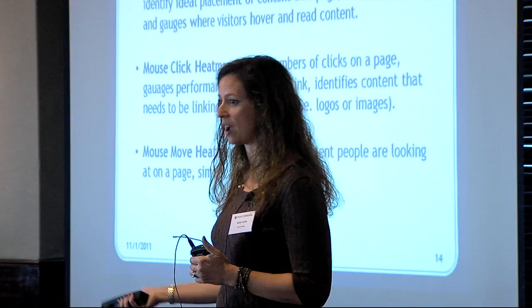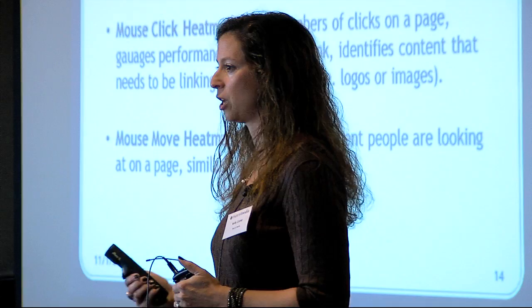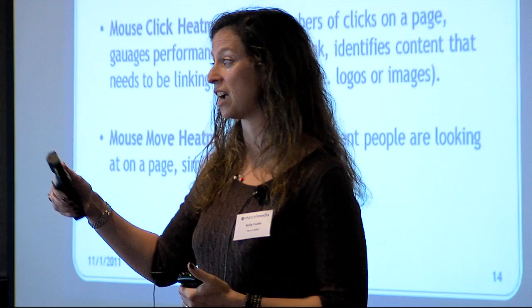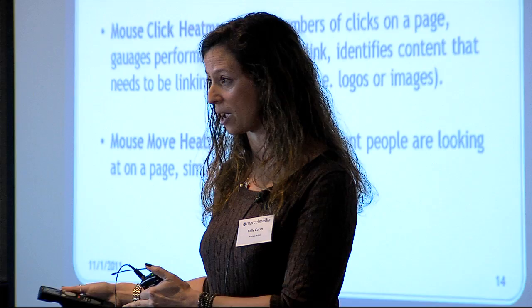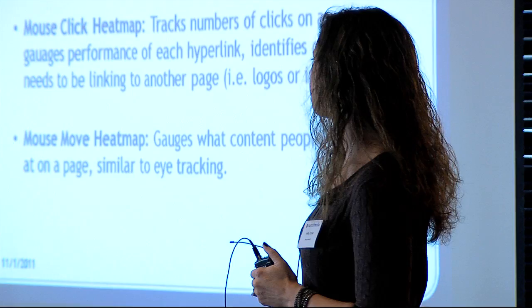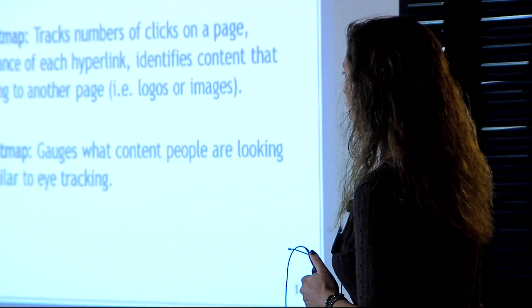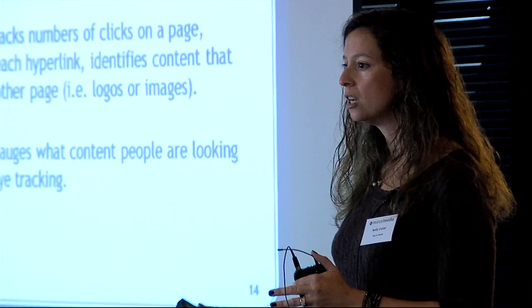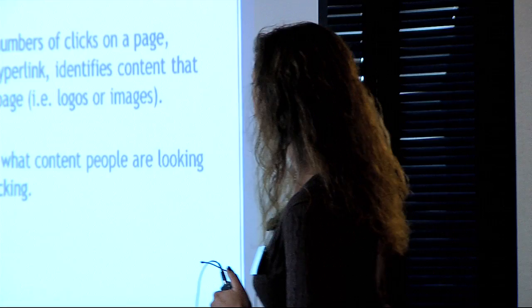We see this frequently when people go into a category page and can't find the product they want. They go back to the home page, click on another category page, still don't find it, go back again — when frequently they could have gotten to additional category pages from the first category page without realizing it. This gives us insights that maybe the navigation isn't as intuitive as we wanted. We can also track the number of clicks within a page, which helps us understand how links are performing.